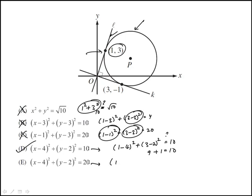And then finally, this one would be (3-2)² = 20. 3 squared would be 9 plus 1. Again, it's not equal to 20. So just by using one point that's on the circle, we can get to the answer. That's why this is easy.